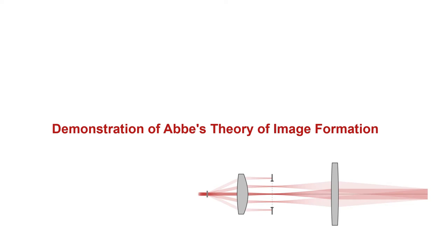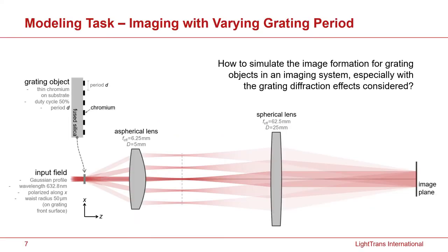Next, I'd like to show some typical examples which you can very clearly demonstrate and show by use of the software VirtualLab Fusion. The first example I select here is a demonstration of Abbe theory of image formation. Here, the modeling task is that we want to see how an image is generated when it goes through a complete image system.